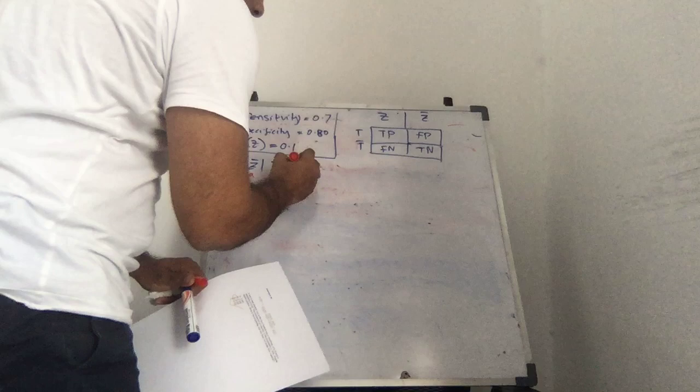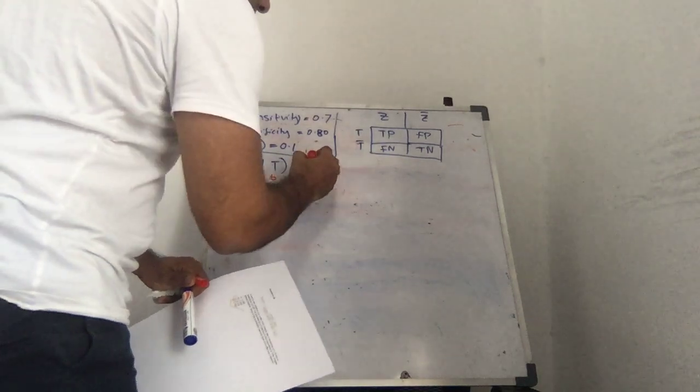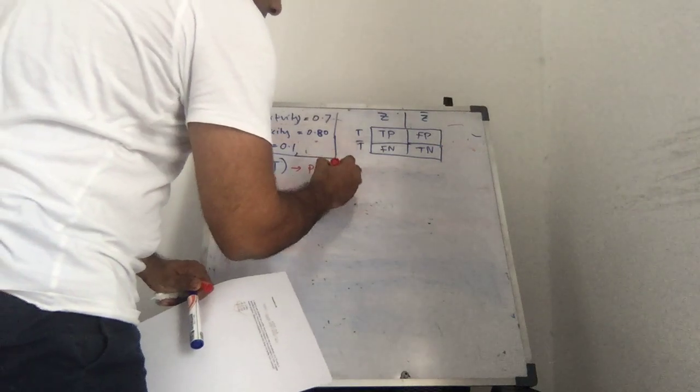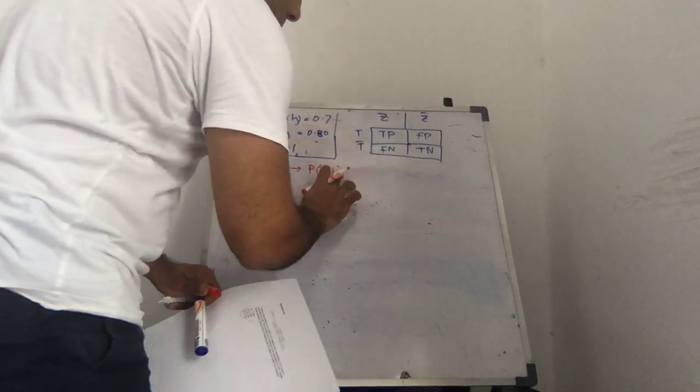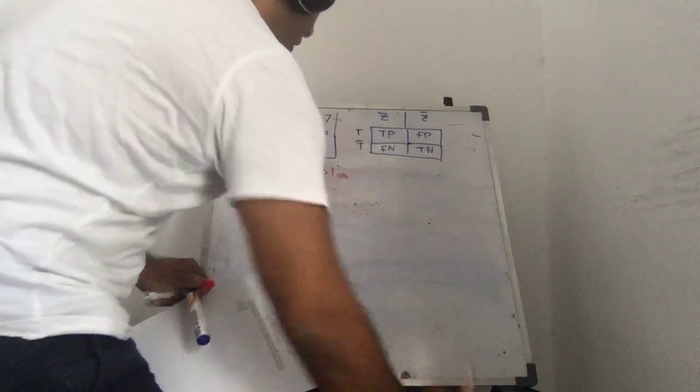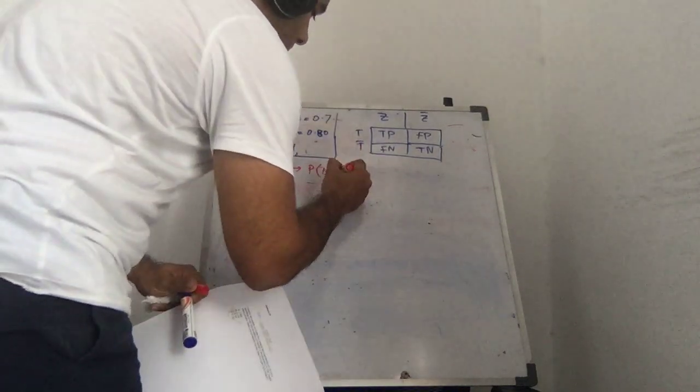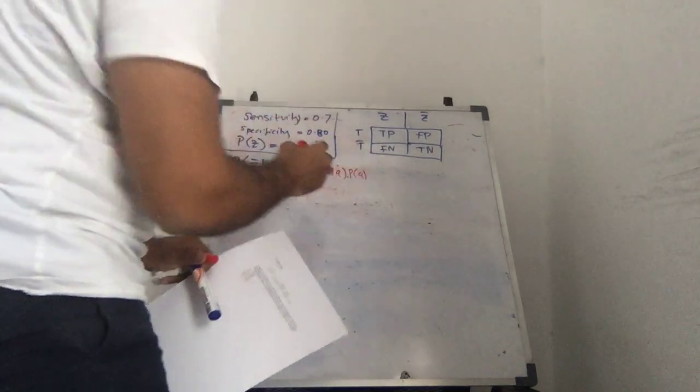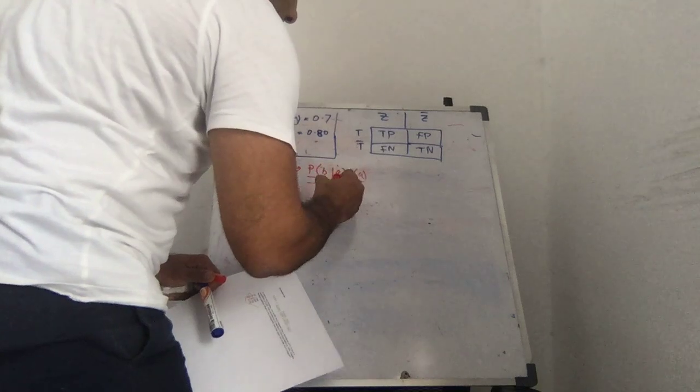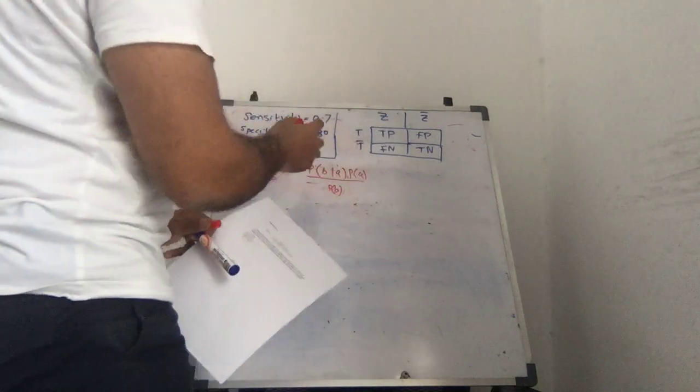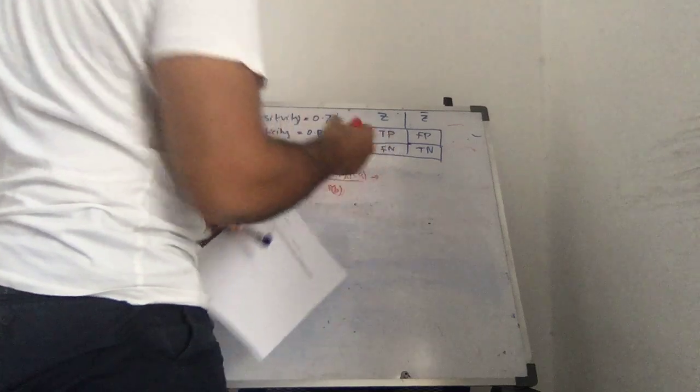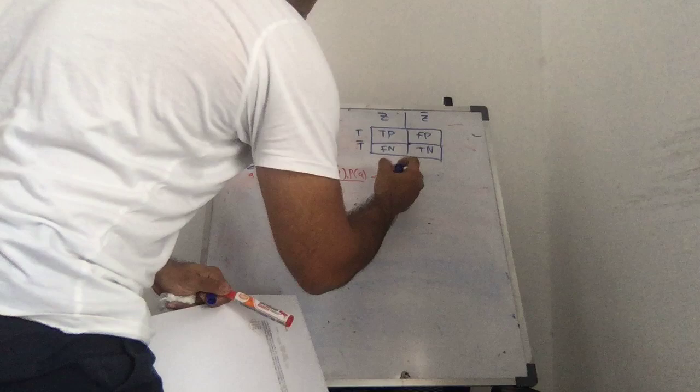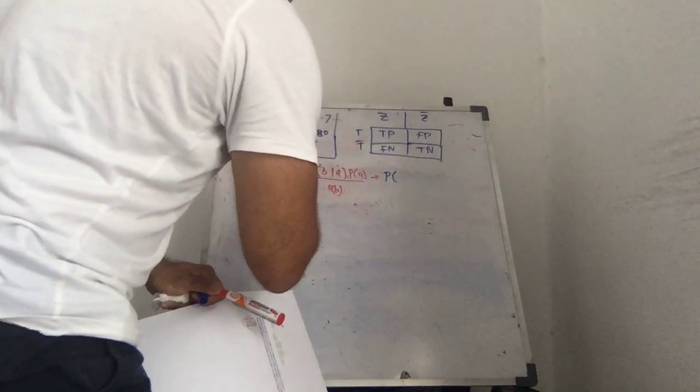So this can, we can say this as, we can write this out as probability of A given B is the probability of B given A times the probability of A divided by the probability of B, right? The probability of A.